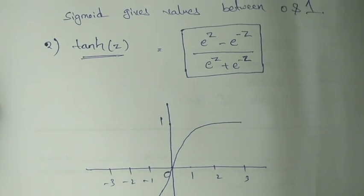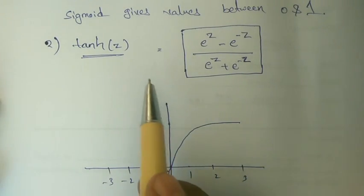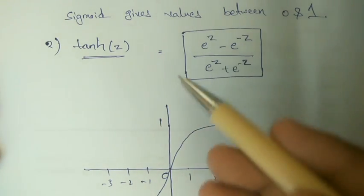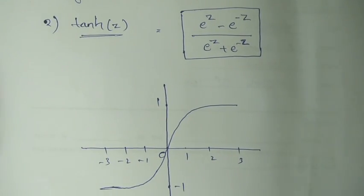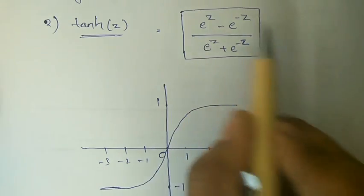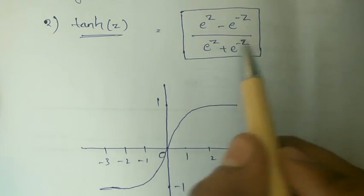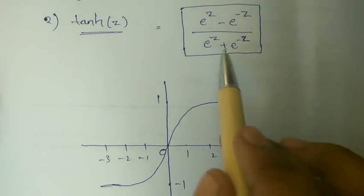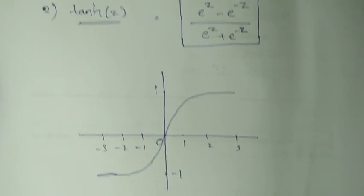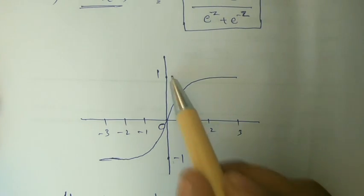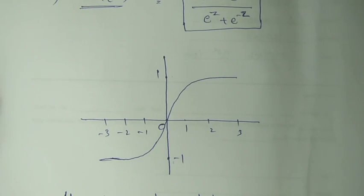The second type of activation function is tanh. The difference between tanh and the sigmoid function is that in tanh, the value lies between minus 1 and 1. The formula for tanh is: e power z minus e power minus z, divided by e power z plus e power minus z. The curve goes from minus 1 to 1, and it gives values between minus 1 and 1.